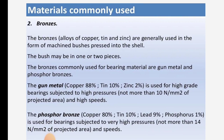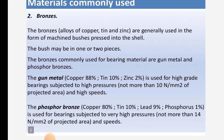Materials commonly used also include bronzes. Bronze — an alloy of copper, tin, and zinc — is generally used in the form of machined bushes pressed into a shell. The bush may be in one or two pieces. Bronzes commonly used for bearing material are gunmetal and phosphor bronze. Gunmetal (copper 88%, tin 10%, zinc 2%) is used for high-grade bearings subjected to high pressures, not more than 10 N/mm² of projected area, and high speeds.